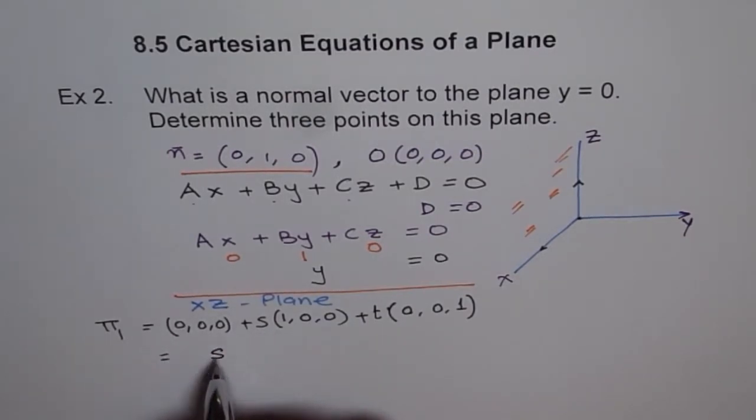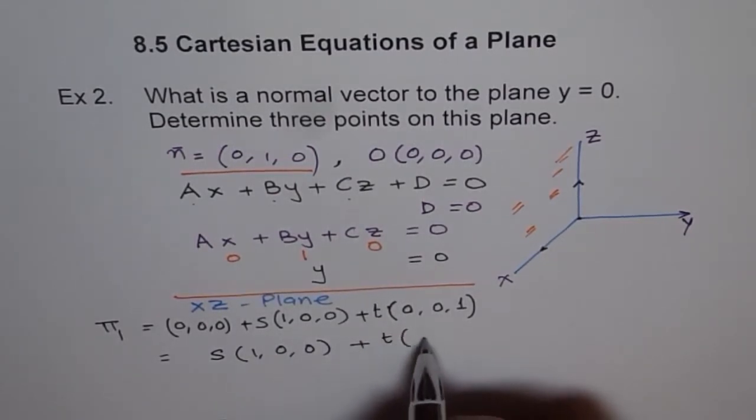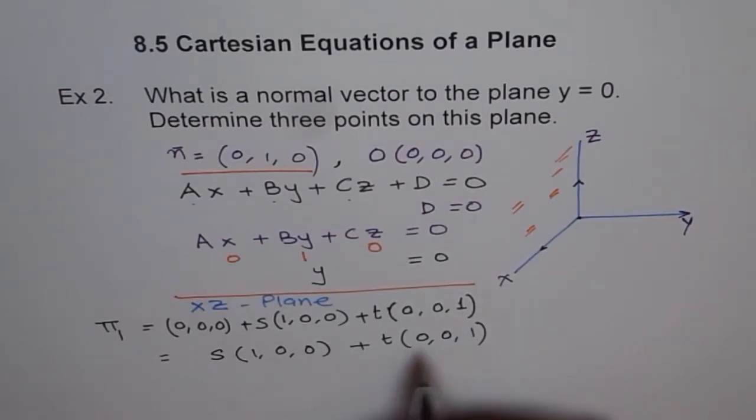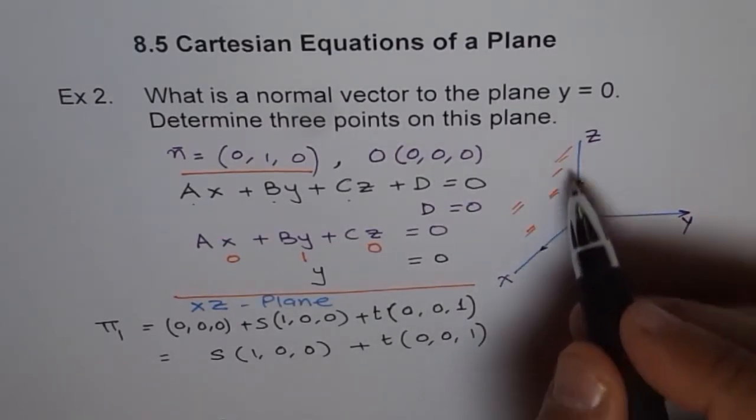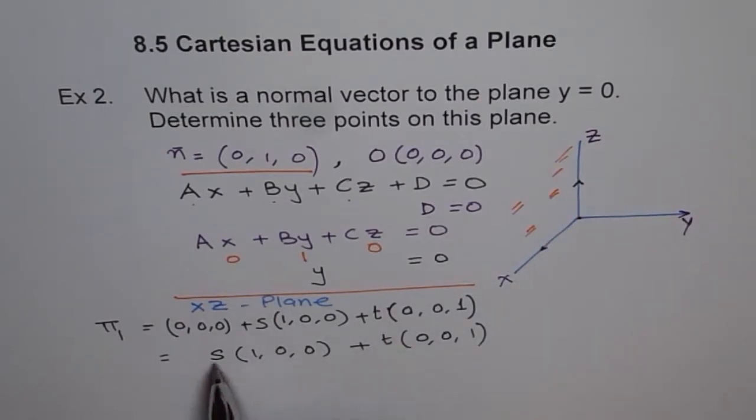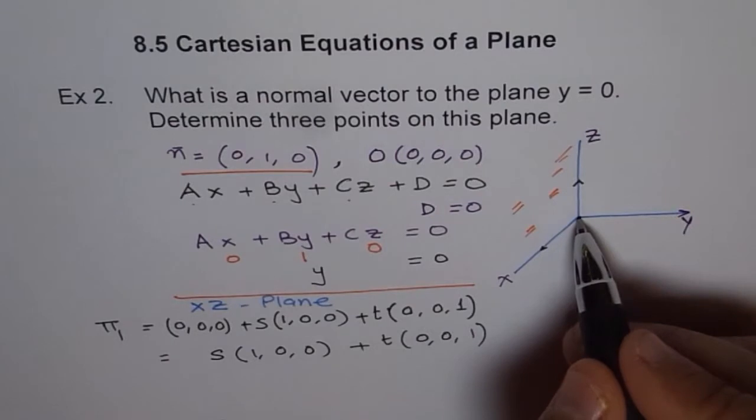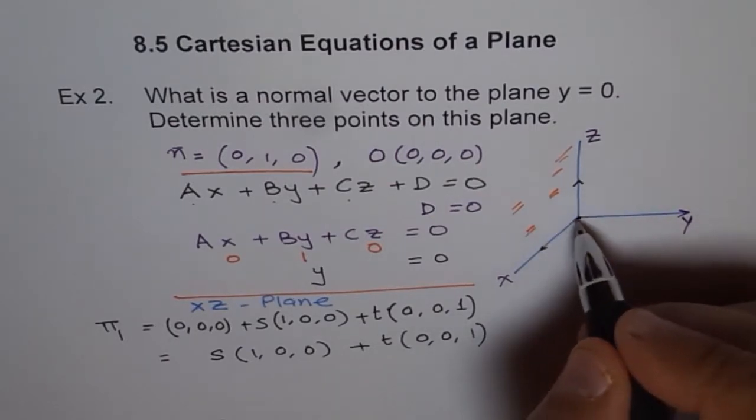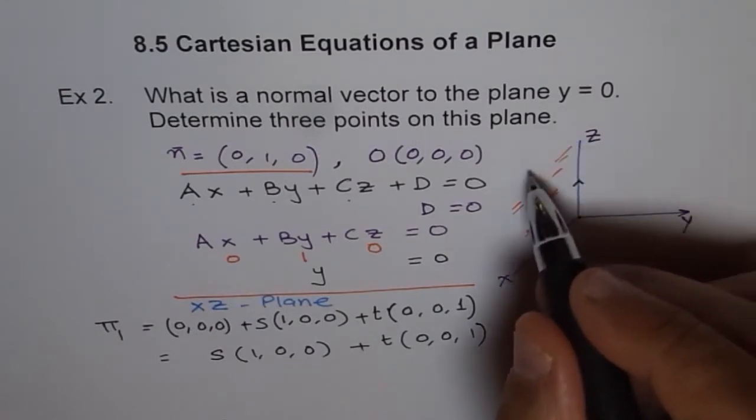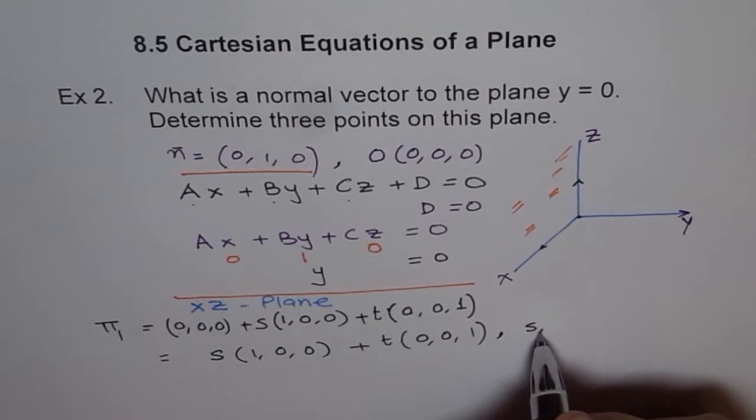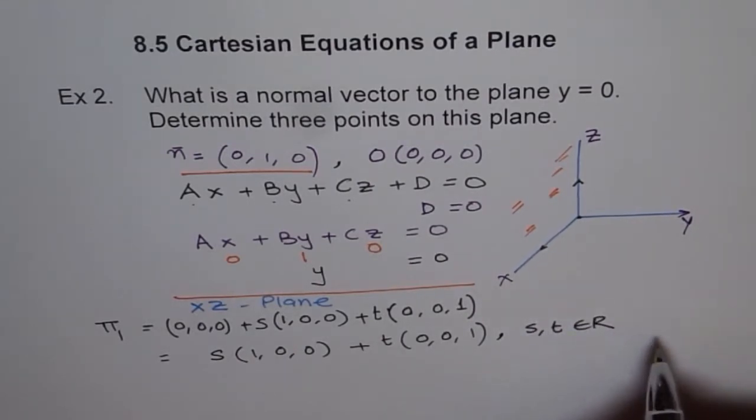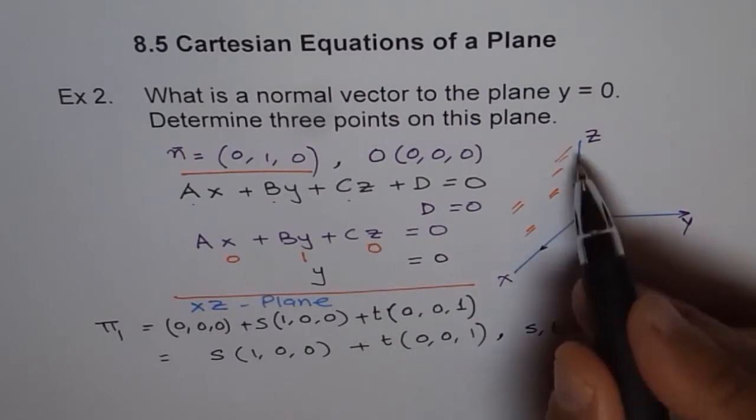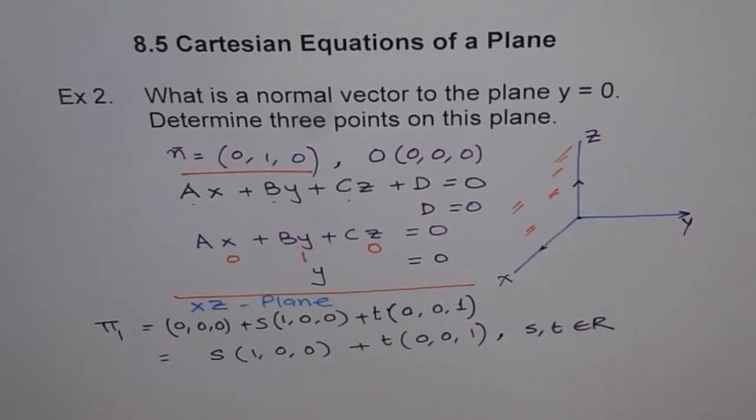So that is s times (1, 0, 0) plus t times (0, 0, 1). Now this plane represents each and every point on Xz plane. So you can have a linear combination. Any combination like, let's say 1 here and 1 there, so you can get to this point. 2 here, 1 there, this point. So we get so many combinations. And now since s and t belongs to real numbers, all the points on this plane Xz are covered by that equation. So that becomes the equation of our Xz plane.